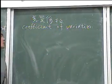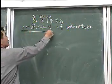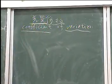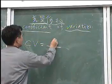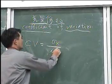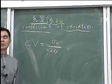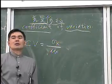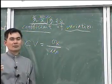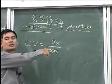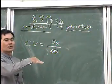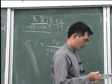Another measure of dispersion is the coefficient of variation (CV), equal to sigma-x divided by mu-x — standard deviation divided by mean. When comparing two datasets to determine which is more dispersed, the one with the larger CV is more spread out relative to its mean.